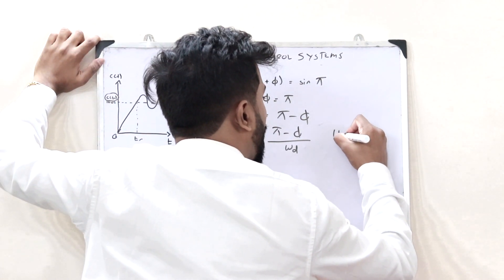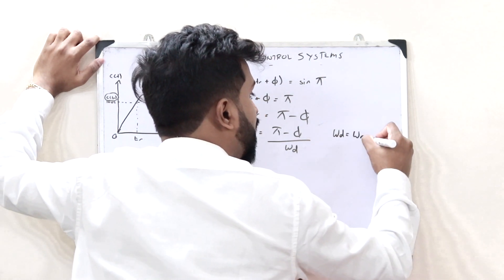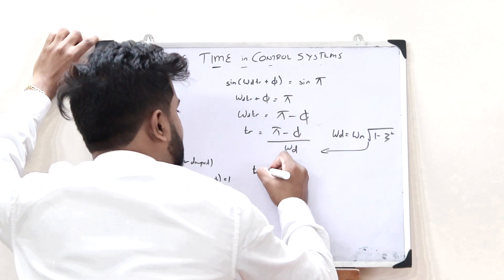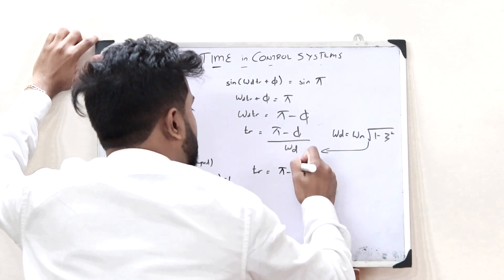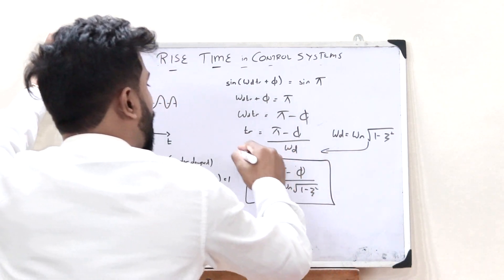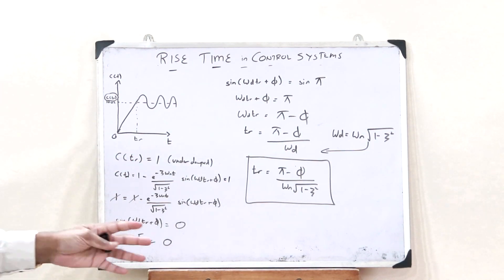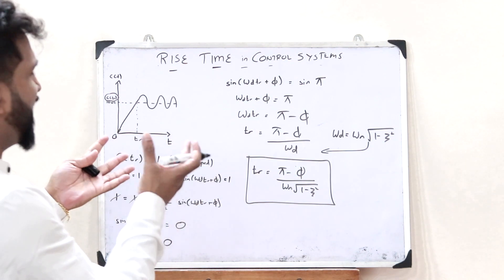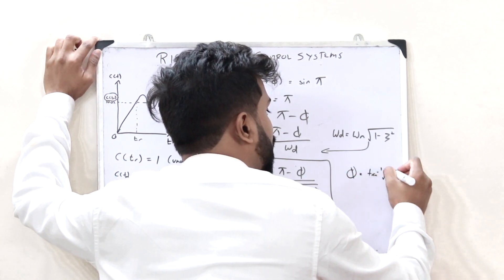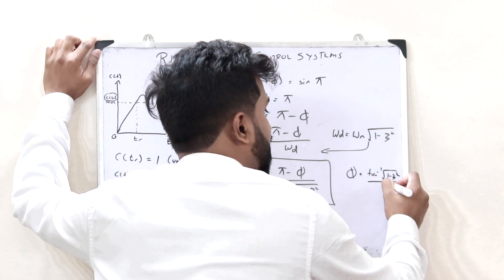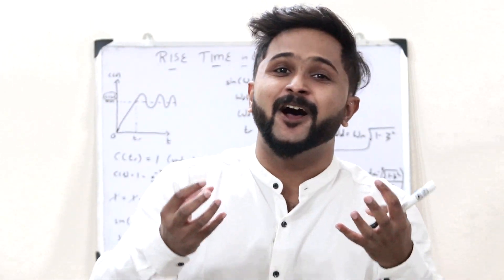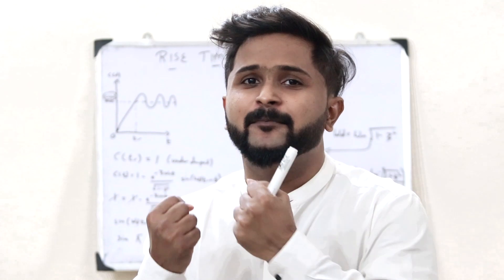We know that ω_D = ω_N · √(1 − ζ²). Substituting this, we get the rise time T_R = (π − φ) / (ω_N · √(1 − ζ²)). This is the required expression for the rise time in the case of an underdamped control system. Here, φ = tan⁻¹(√(1 − ζ²) / ζ).